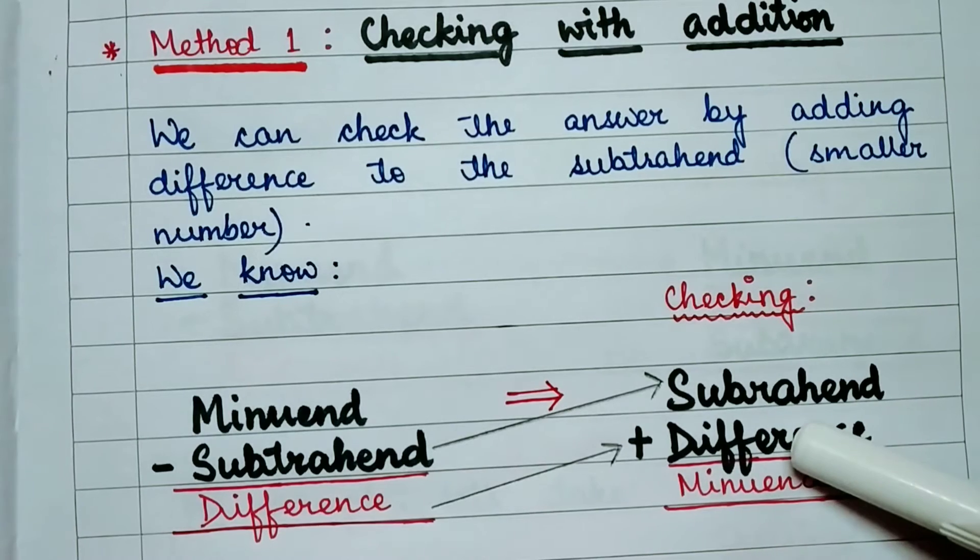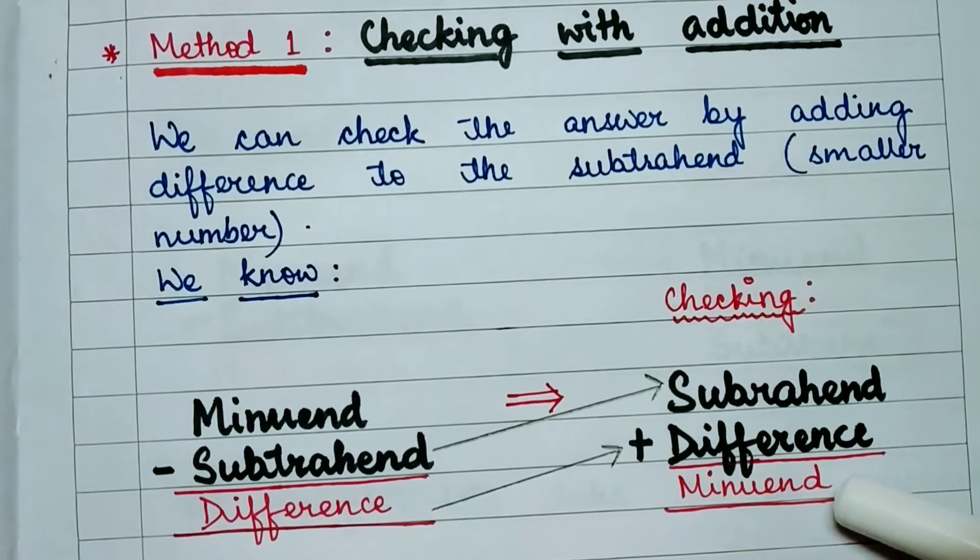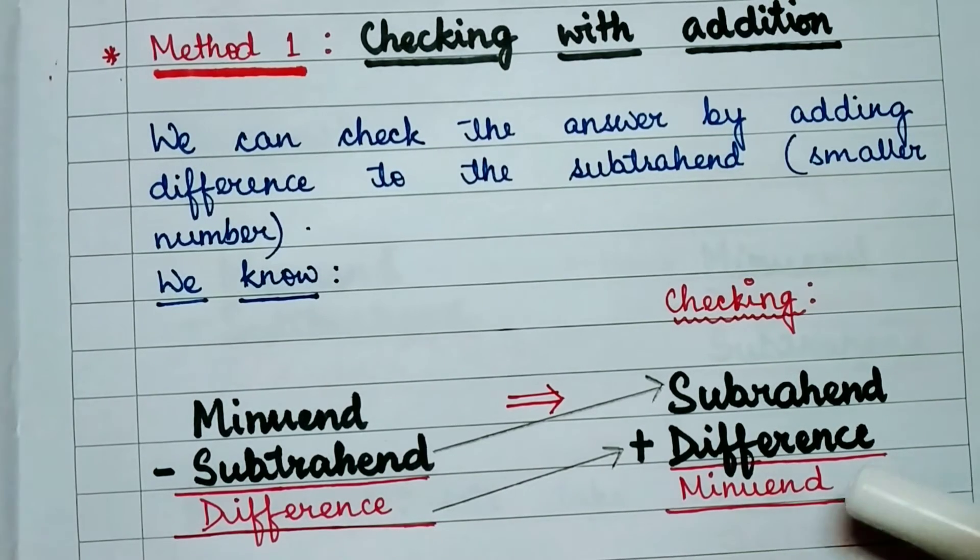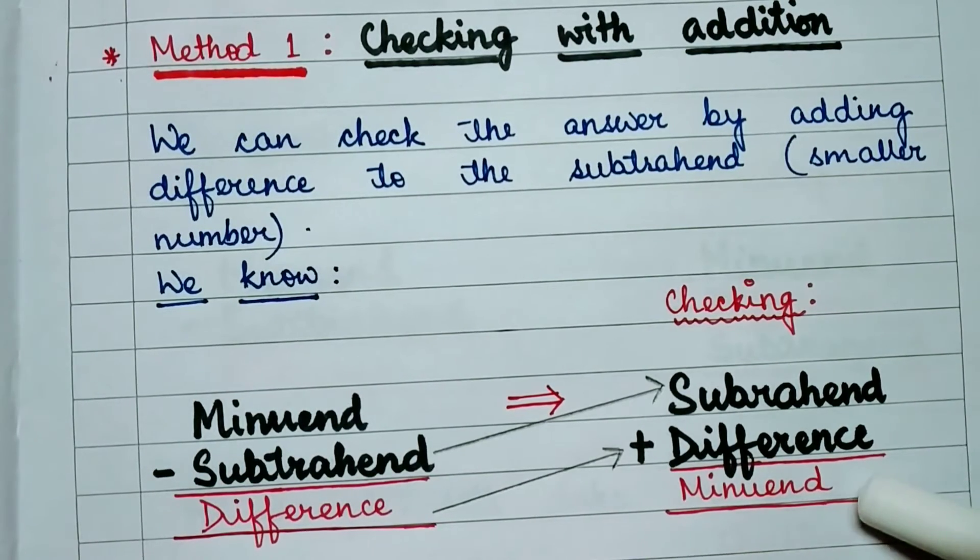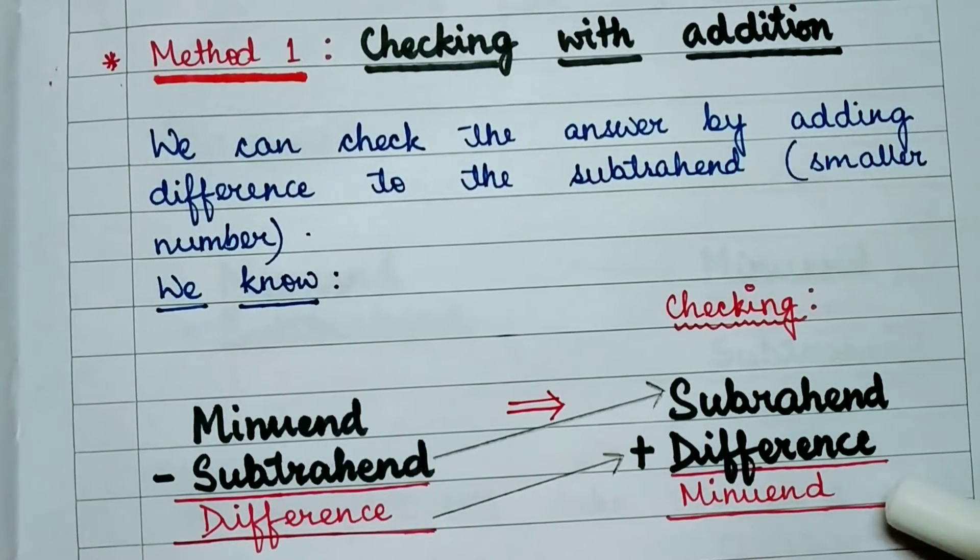We will add subtrahend and difference. After adding the subtrahend and difference, if we get minuend as the result then our answer is correct. Our subtraction is correct. Our difference which we have obtained is correct.